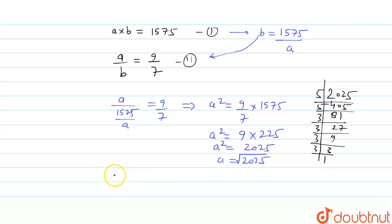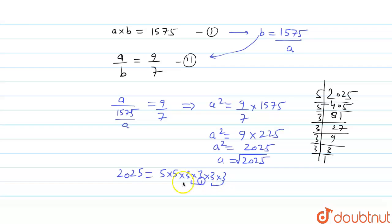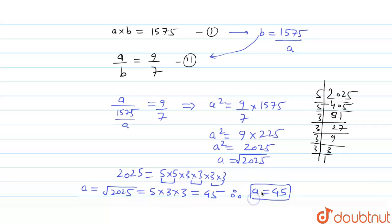So the prime factors of 2025 are 5 × 5 × 3 × 3 × 3 × 3. Therefore the square root of 2025 is 5 × 9, which equals 45. Therefore, a equals 45.